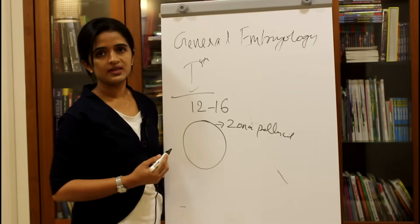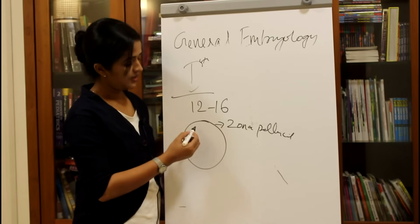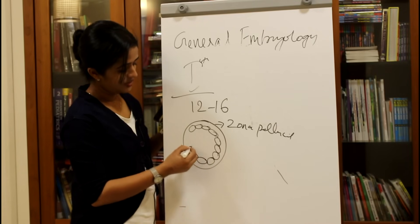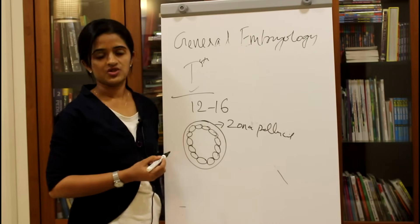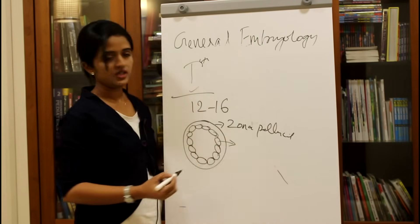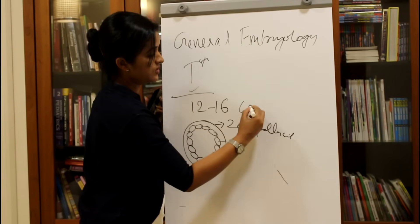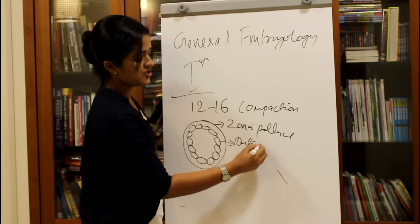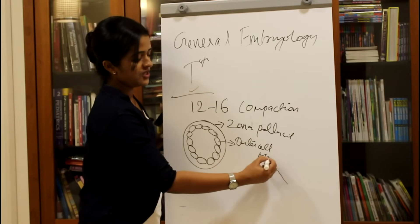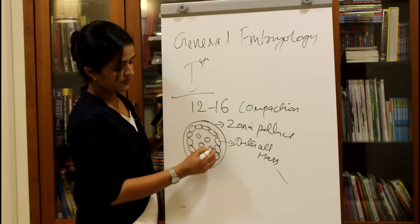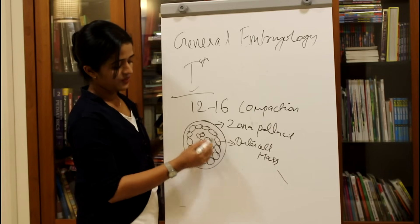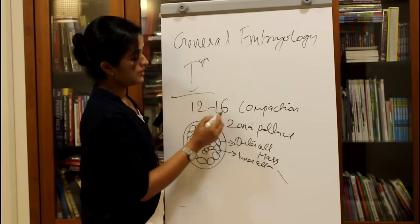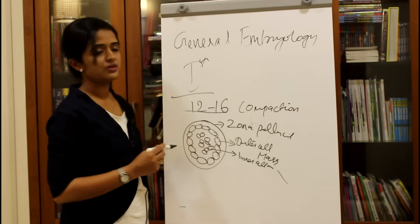When it reaches 12 to 16 cell stage, by a process called compaction the cells of the outer periphery form an outer cell mass connected by tight junctions with no space between the cells. The cells within the inner aspect are loosely connected with inner spaces in between, and this group of cells is known as the inner cell mass. The cells will be around 12 to 16 cells. This stage is called morula.